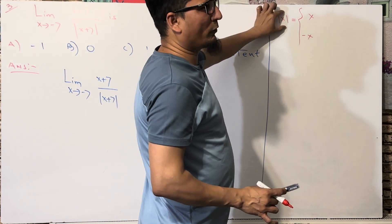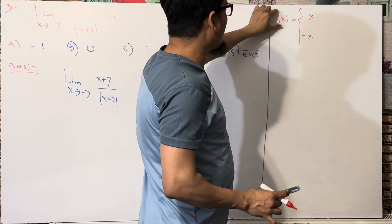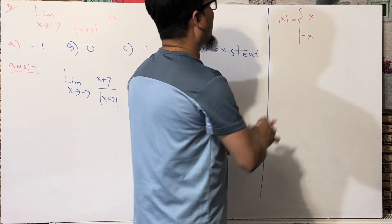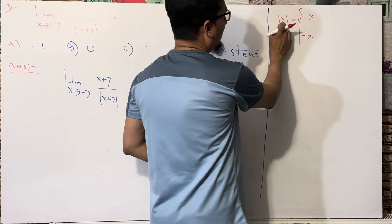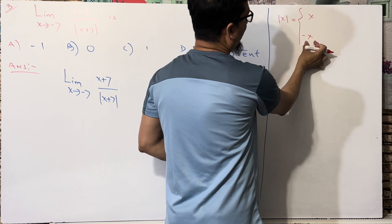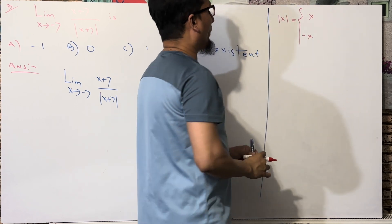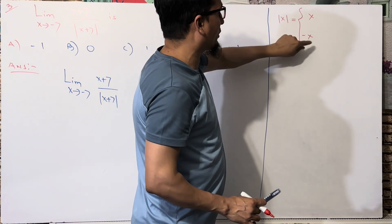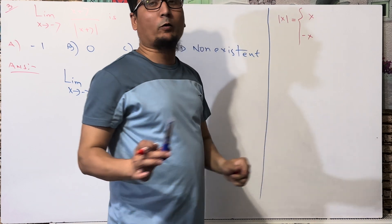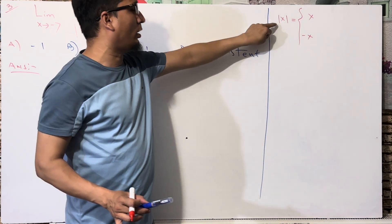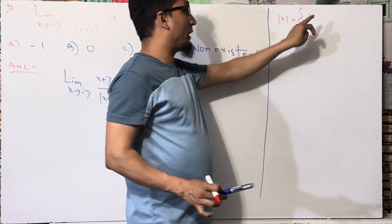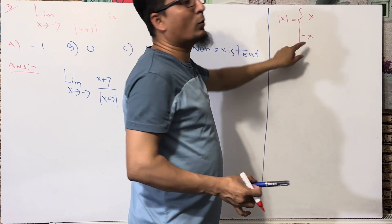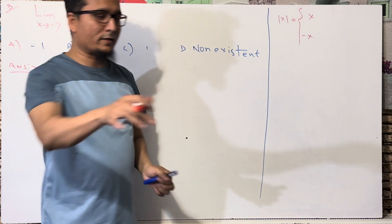So whenever you see any absolute value, it can be written as x or the opposite, minus x. We can say that mod of x equals x or mod of x equals minus x. The question is: when do we take mod(x) = x, and when do we take mod(x) = minus x?